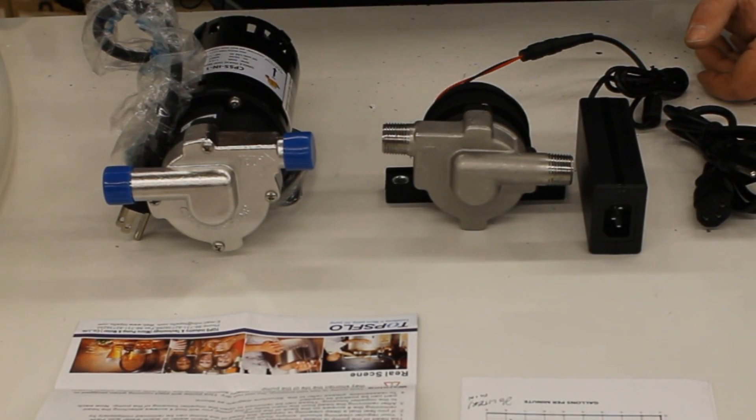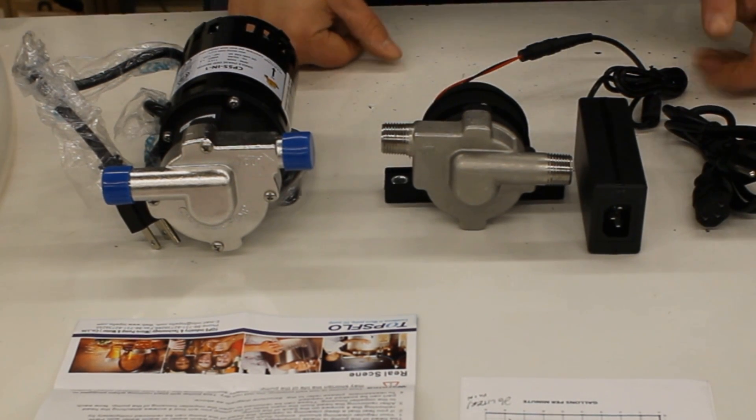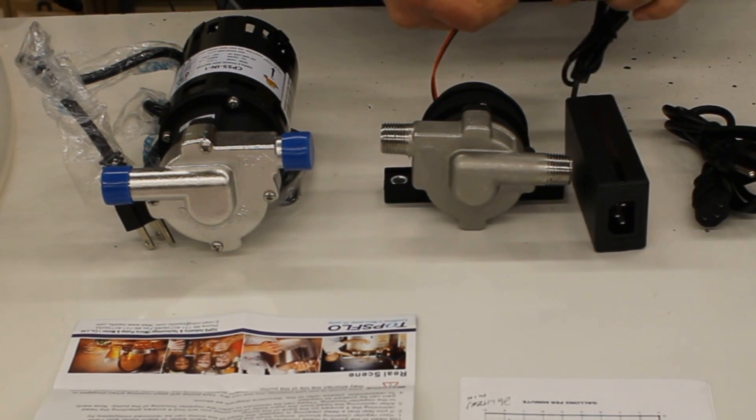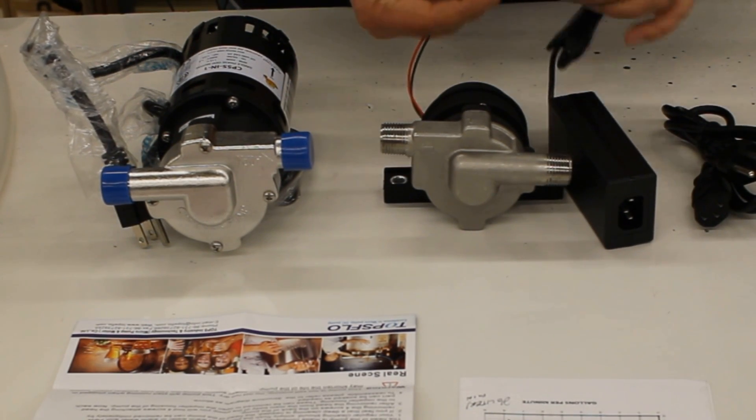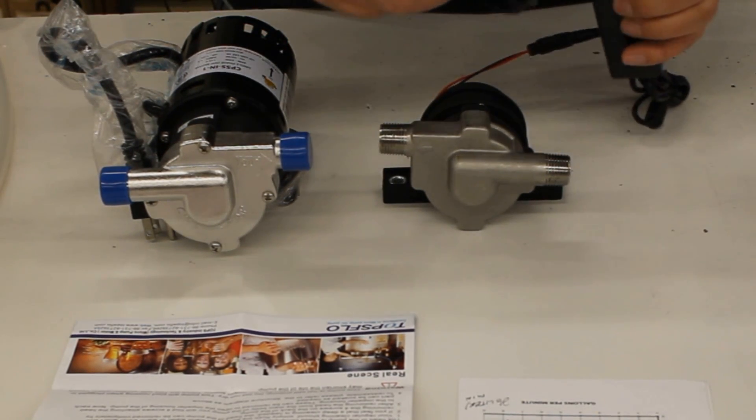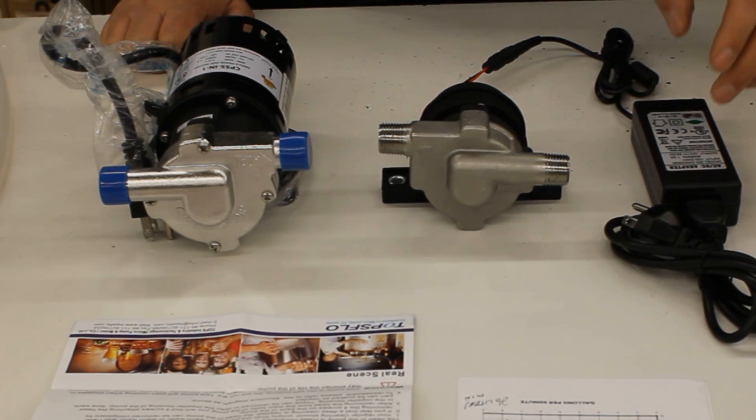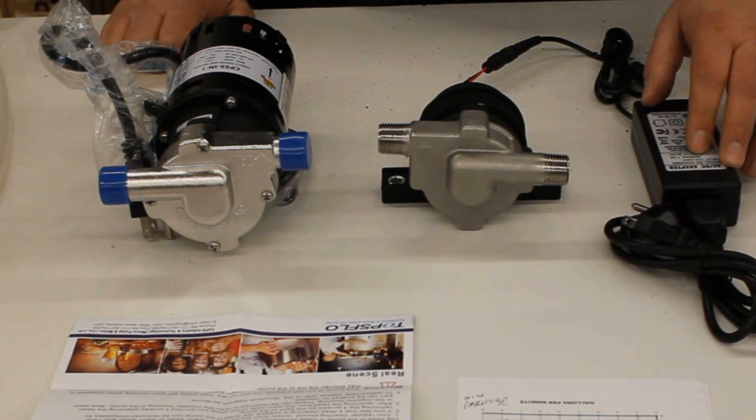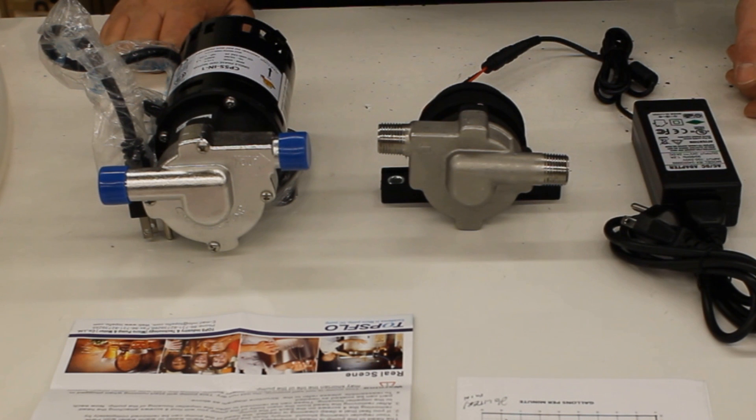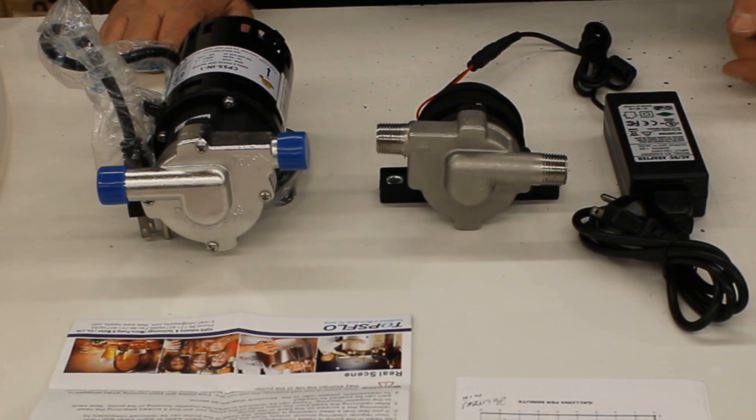The Chugger AC motors are either 115 or 230 volt. The TopsFlo pump comes with an AC adapter to convert to 24-volt DC, which disconnects right there, and it also comes with a power cord to get the AC voltage into the adapter. Just like a laptop adapter that plugs in there. The cool thing about this adapter is that it doesn't care what the AC voltage coming in is. If it's between 100 and 240 volts, it will still generate the appropriate 24-volt DC.